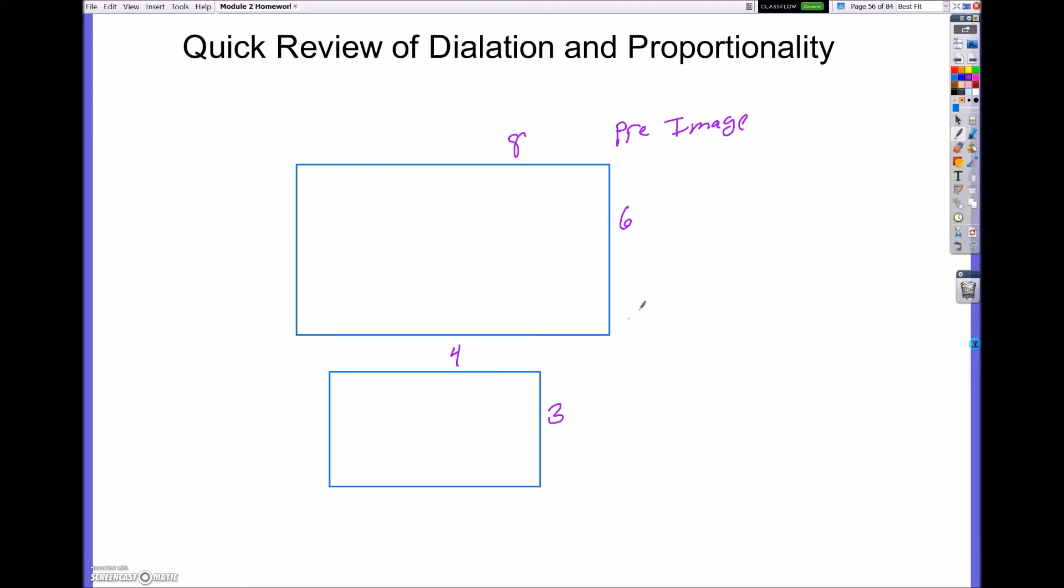So looking at this small rectangle, this would be 4 over 3. Now to set it equal, this one would be 8 over 6. And if we look at these two, those would reduce to 4 over 3 to 4 over 3. And you can see that they are equivalent.